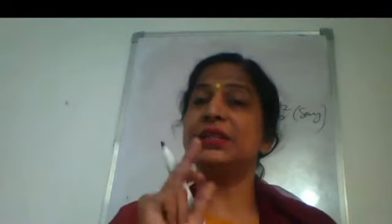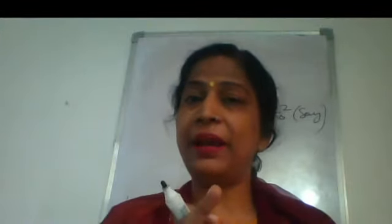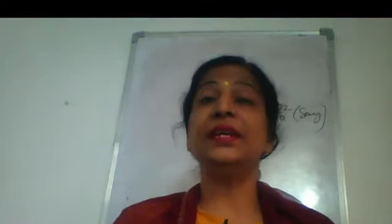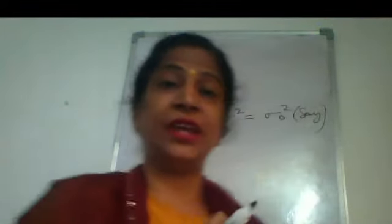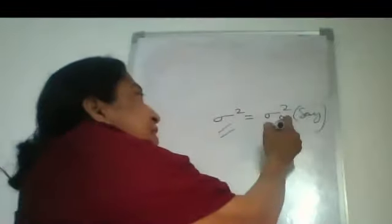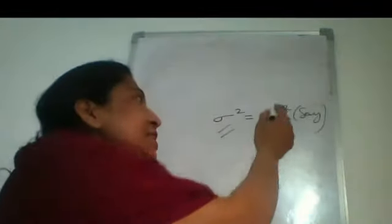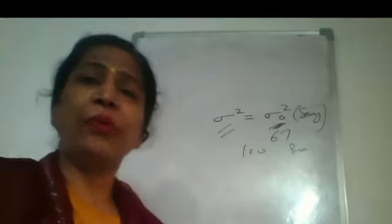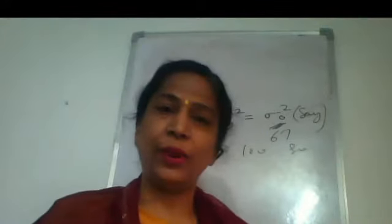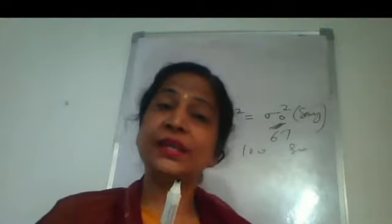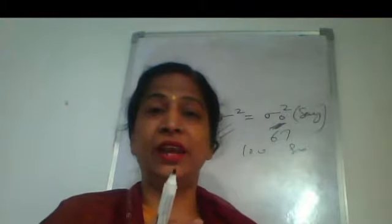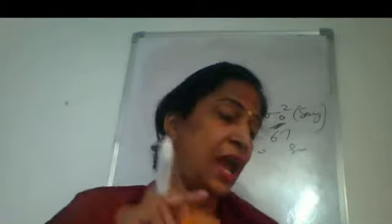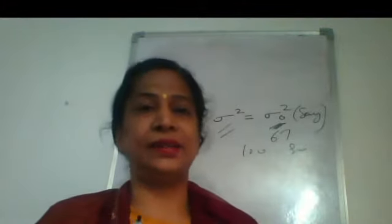This is a univariate distribution with one variable, and we need to check — we need to test — the population variance. Whether this population variance is equal to 67, 100, 80, or any given amount, we are asking whether it equals that value. To test if the population variance is equal to a particular value means we have to test its hypothetical value.